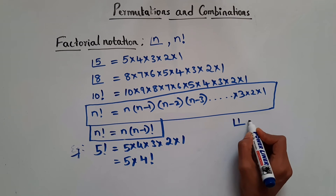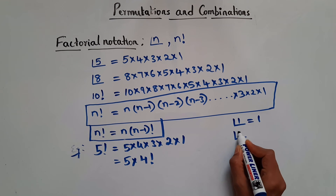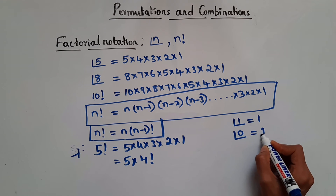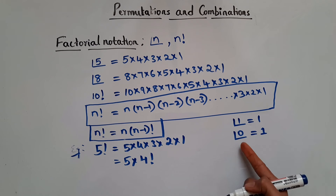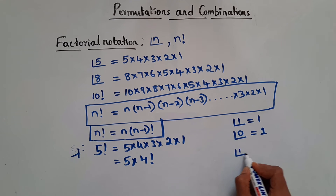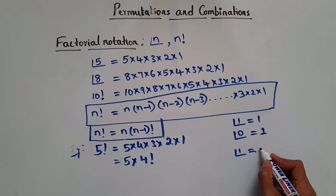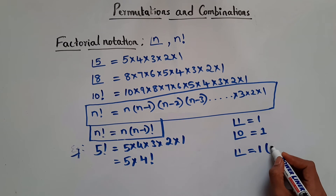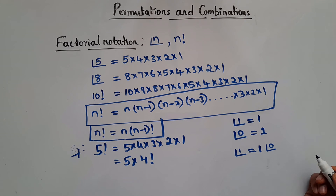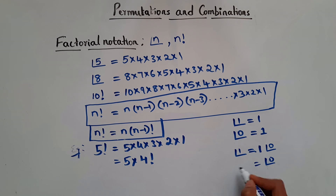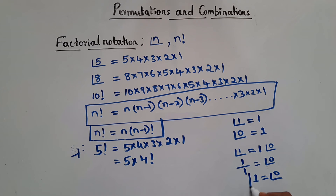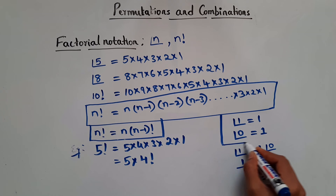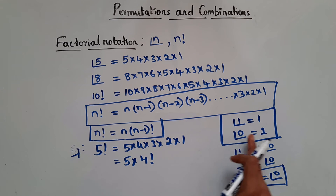Now, 1 factorial is 1. What is 0 factorial? 0 factorial is also 1. To see why: using the property, 1 factorial = 1 × (1−1) factorial = 1 × 0 factorial. Since 1 factorial is 1, we get 0 factorial = 1/1 = 1. So always remember: 1 factorial is 1 and 0 factorial is also 1.